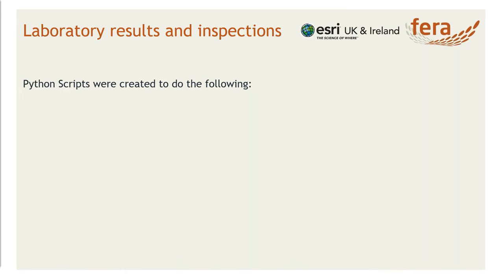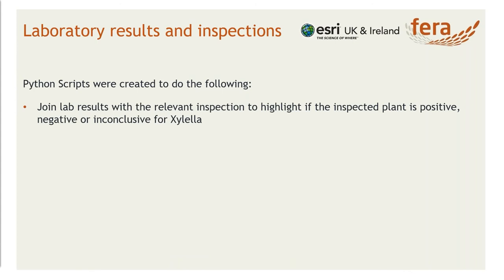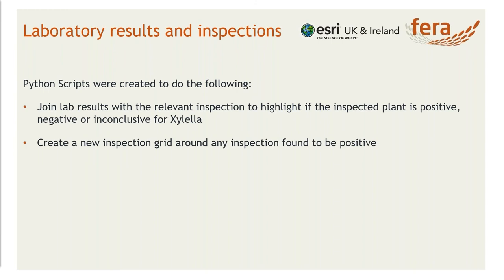We've got a couple of Python scripts that run each evening. The first takes all those lab results, looks through all the barcodes that have been uploaded along with the results, and joins that barcode back to the barcode of the inspections done out in the field. So now we know where that inspection was taken — we have a spatial location — and we've also got results back from the lab: was it positive, negative or inconclusive for Xylella? In addition to that, for any positive finding, a second script creates those inspection zones around that positive. In effect, we've closed the loop — any new positives will automatically generate an inspection grid that can be used for more inspections.